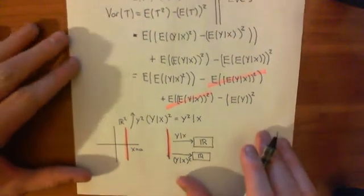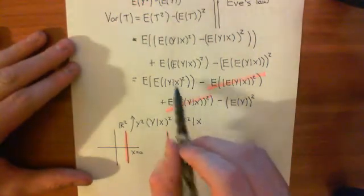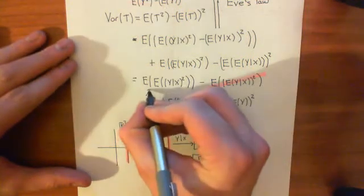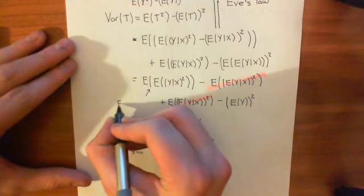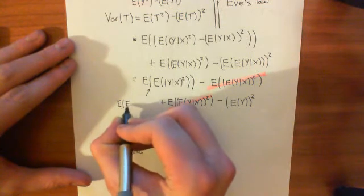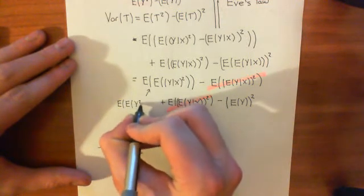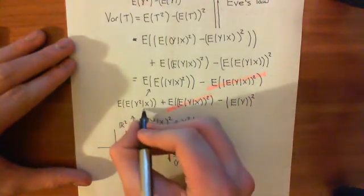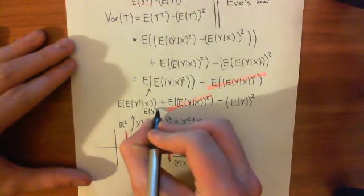So, what we can do is replace y given x with y squared given x in there. So, this bit here, this term here, becomes the expected value of the expected value of y squared given x. And now we can apply Adam's law to that to say that this is the expected value of y squared.